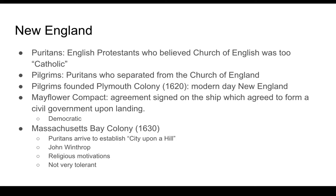The next group of colonies to form are in Massachusetts. Originally it was two groups — the Pilgrims and the Puritans — that established these colonies. Puritans were members of the Church of England who believed the Church of England was too Catholic and wanted to change it from within. Pilgrims were Puritans who believed there was no hope in saving the Church of England and had to make their own church, so they separated from it, whereas the Puritans remained.